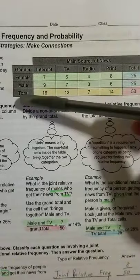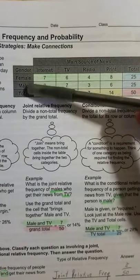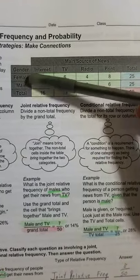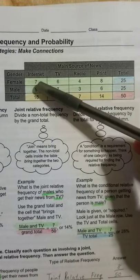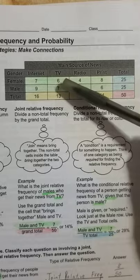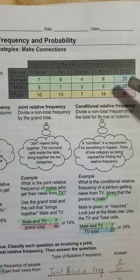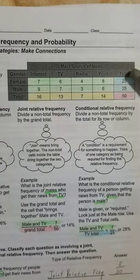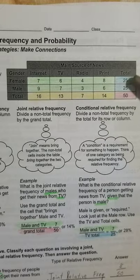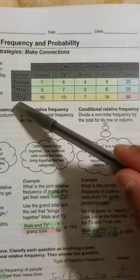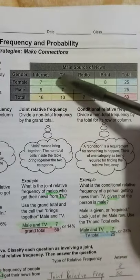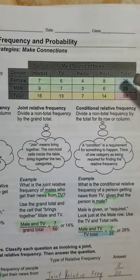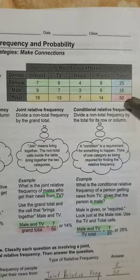On the left side we have female and male, and we have sources of news from the internet, TV, radio, and print. On the right side column you have the total of all the males and females, and on the bottom row you have all the totals of each category of news source. In pink you have the grand total.